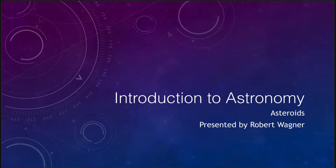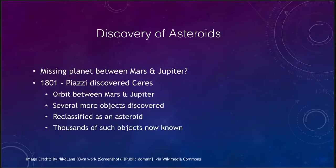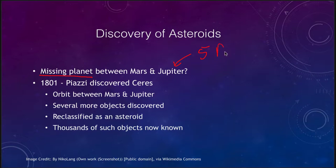Let's start off with their discovery. For a while it was thought that maybe there was a missing planet between Mars and Jupiter, because of the large gap between them. Within the inner solar system, the planets are all spaced very closely, all within about one and a half astronomical units from the Sun. Then all of a sudden you went out to Jupiter at about five astronomical units, meaning there was a big gap between Mars at about one and a half AU and Jupiter at five AU.